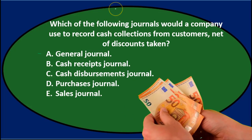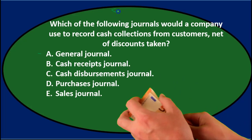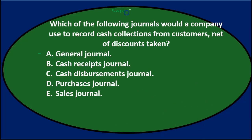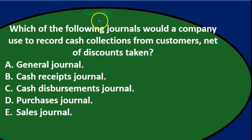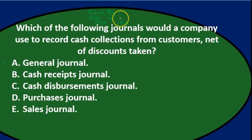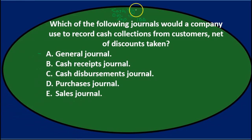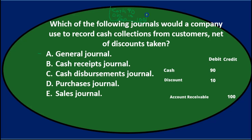So cash collections — cash is being affected. We would debit cash, say $90 received, and debit a sales discount of $10, with accounts receivable credited for $100. They owed us $100, we gave them a $10 discount, and so we actually received $90. That's the journal entry we're trying to fit into a special journal.